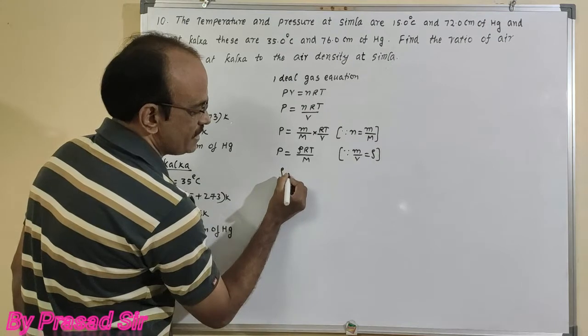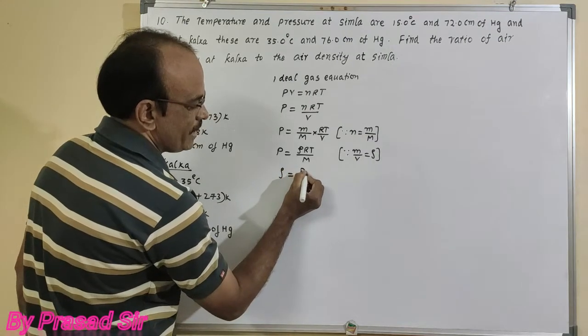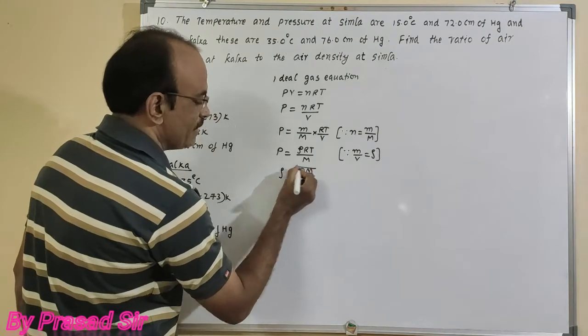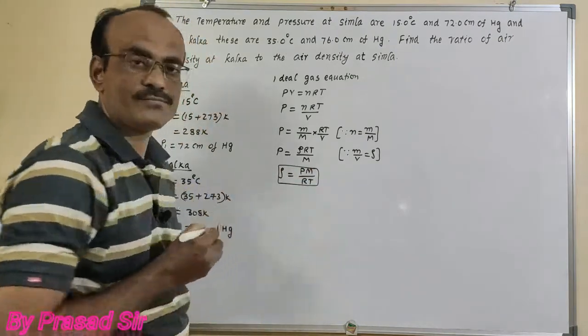But I want to calculate the ratio of air densities. So density equals P times M divided by RT. This is the formula.